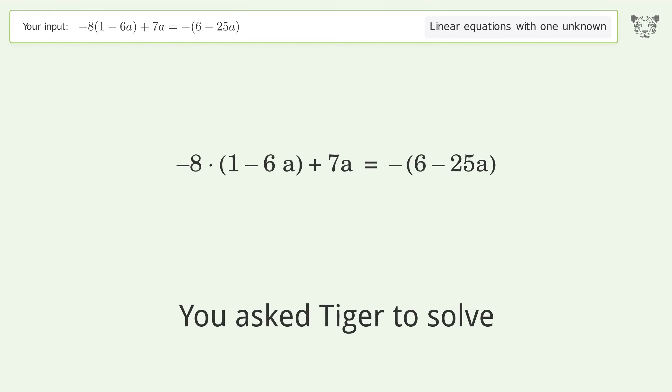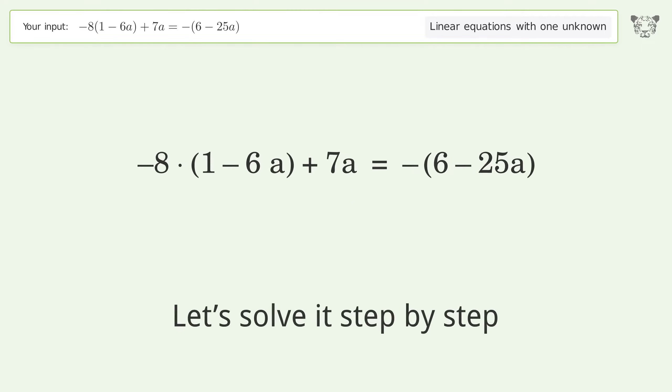You asked Tiger to solve this equation dealing with linear equations with one unknown. The final result is a equals 1 over 15. Let's solve it step by step. Simplify the expression.